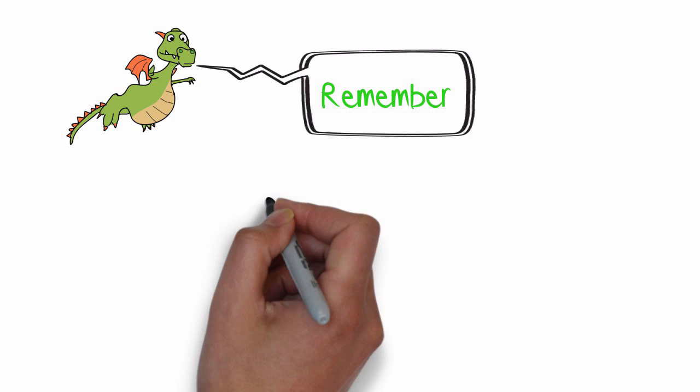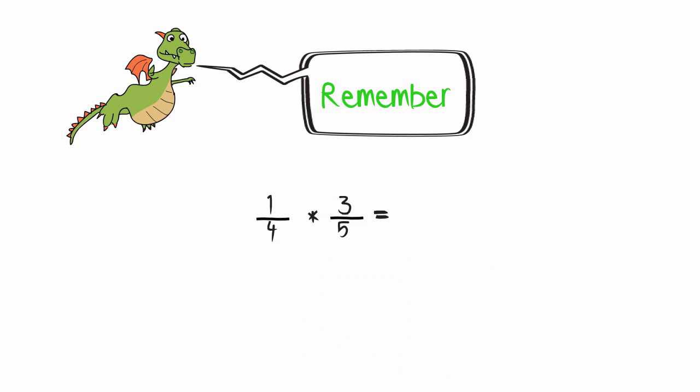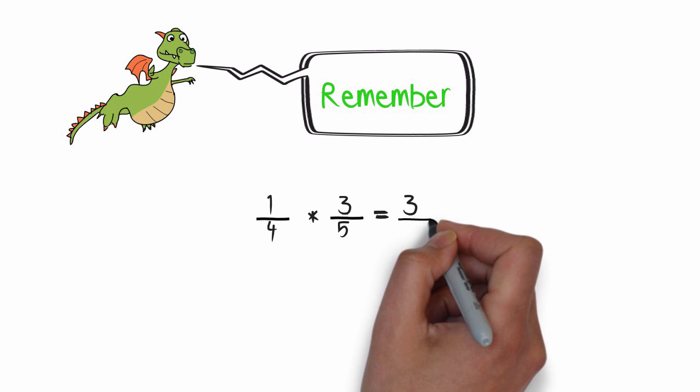Remember, when you multiply 1 fourth times 3 fifths, you multiply the numerator, 1 times 3, and get 3. And you multiply the denominator, 4 times 5, and get 20.